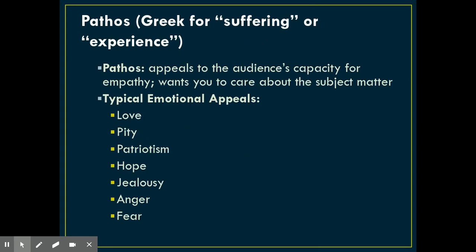Next up, we've got to talk about pathos. Pathos is the Greek word for suffering or experiencing something. Pathos is an appeal to the audience's emotion, specifically their capacity for empathy — being able to feel for someone. They want you to care about the subject matter by building an emotional connection between you and the topic. A lot of different emotional appeals can be used; some of the strongest are love, pity, patriotism, hope, jealousy, anger, and fear. So let's look at some examples in advertising of how pathos is used.